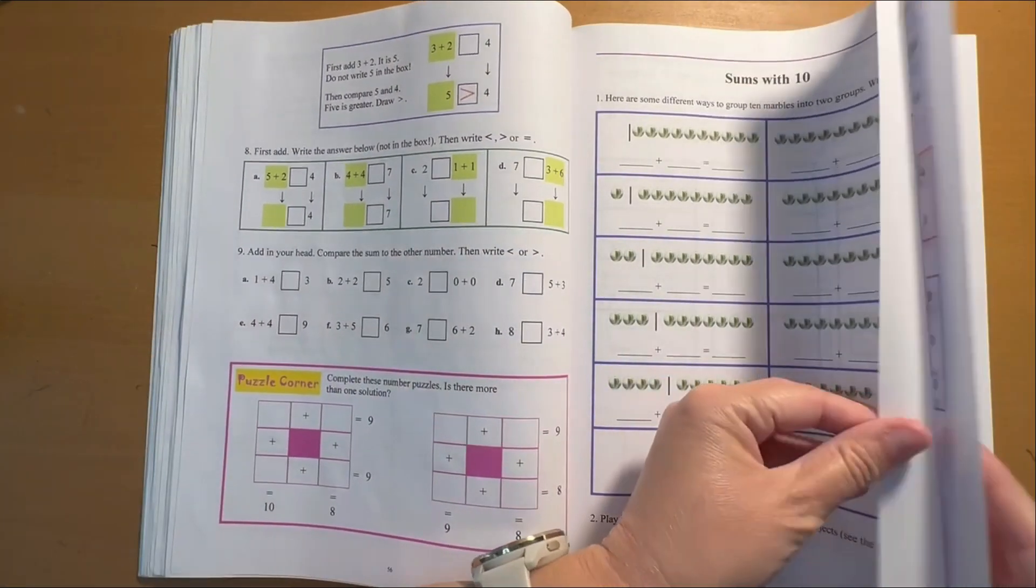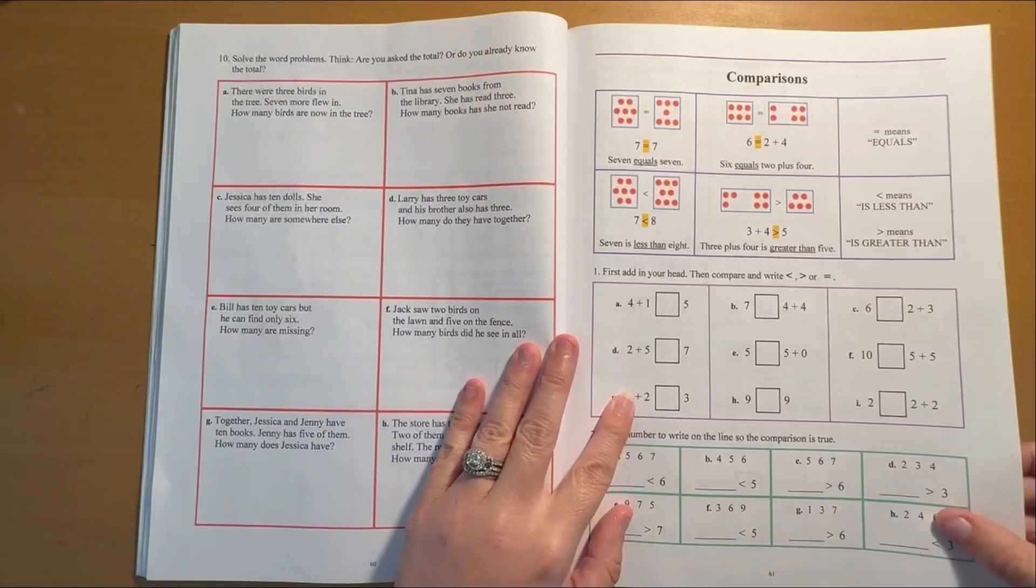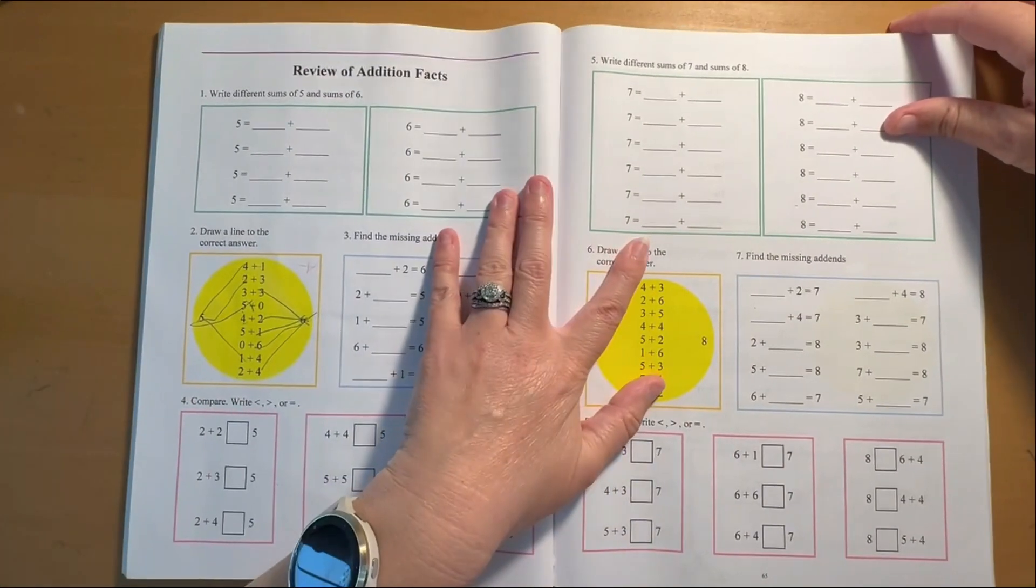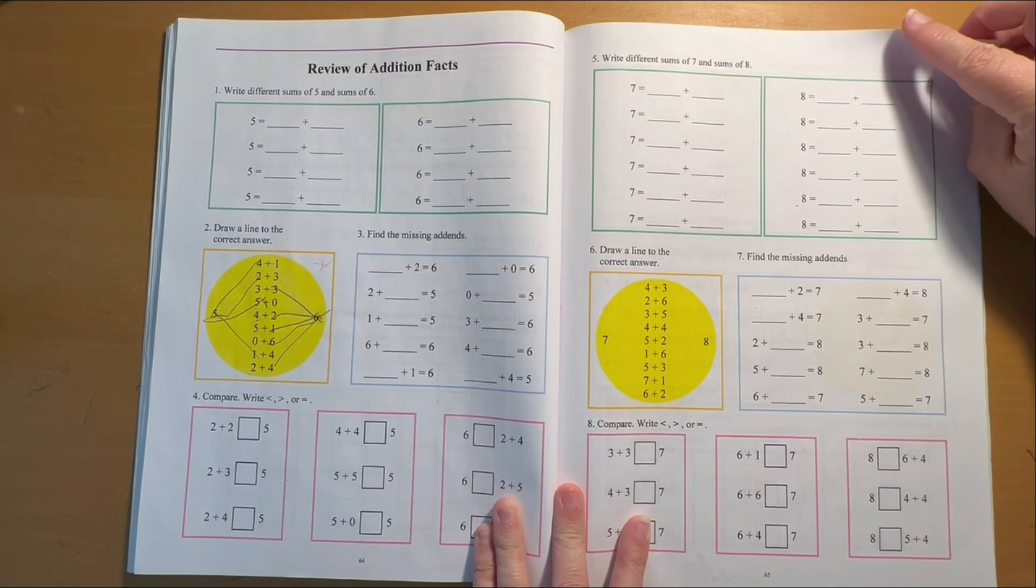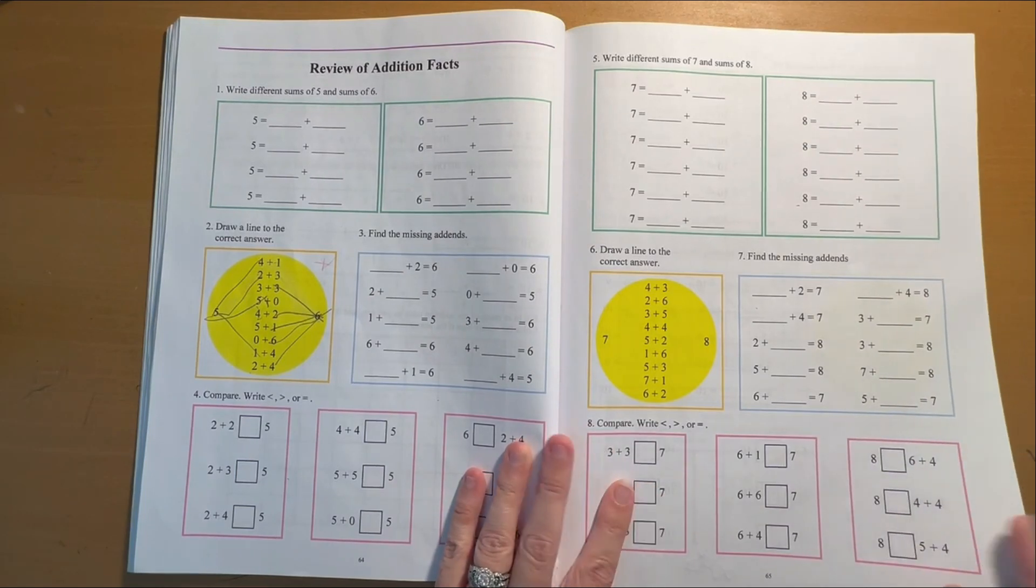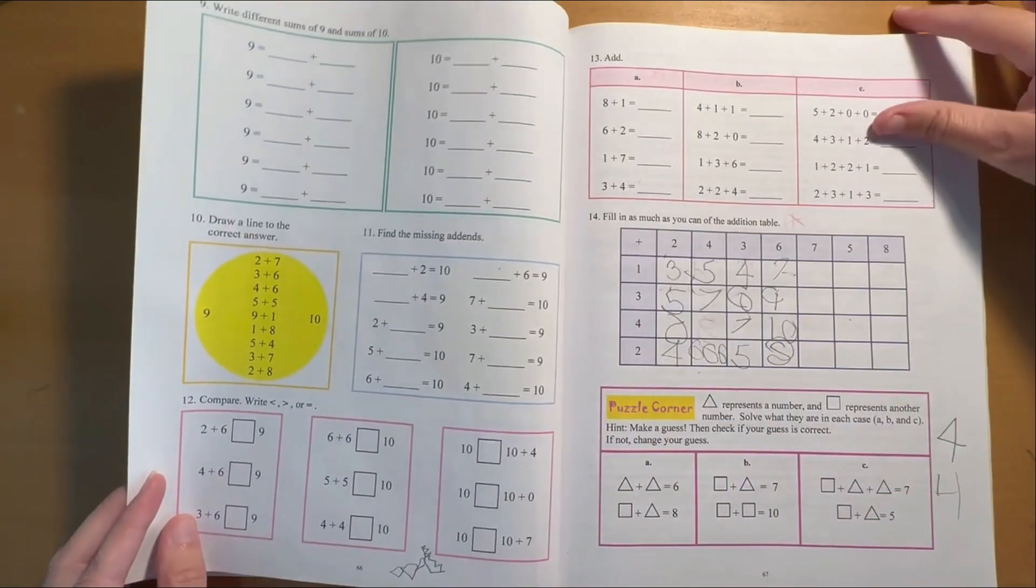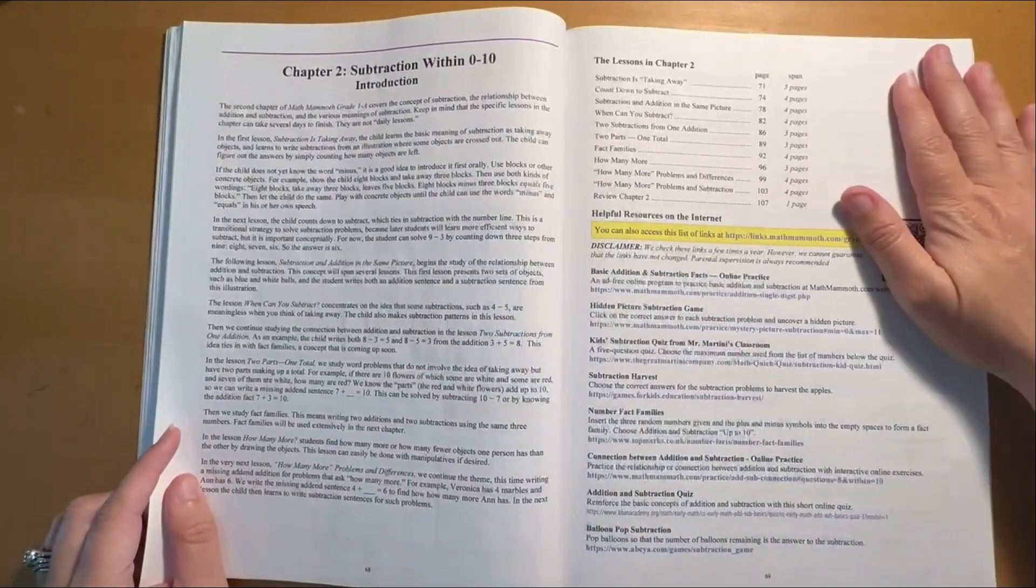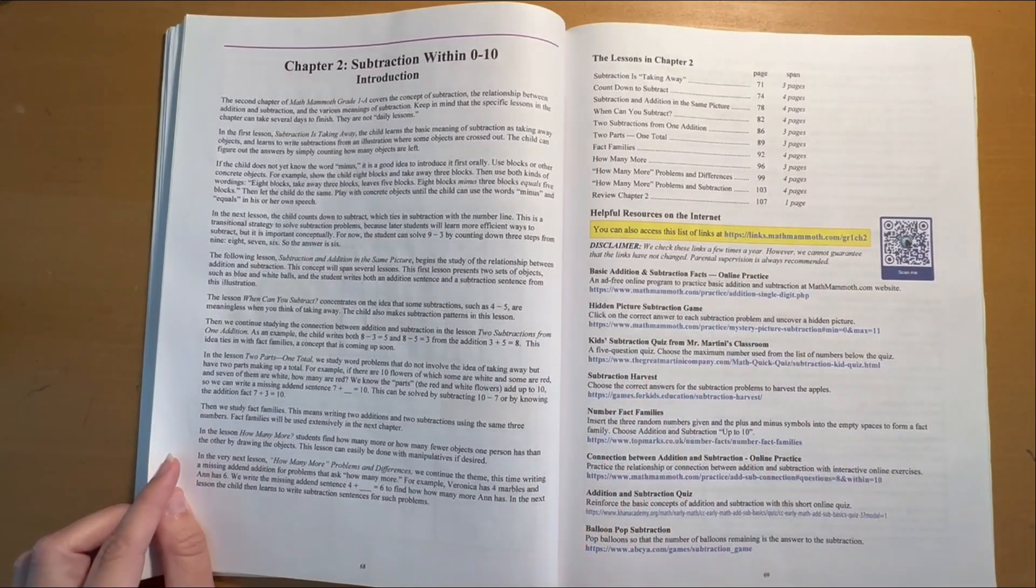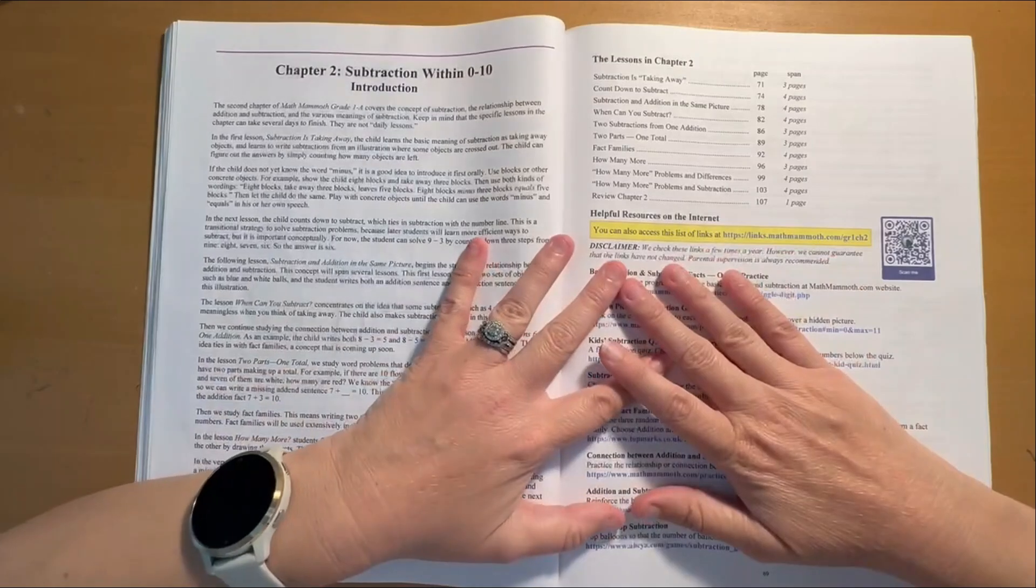Sums with 10. We're all still in this chapter on addition. We're going to do some more comparing quantities. And then here at the very end of the chapter, we have a little bit of review. So you can see if there's anything they completely don't get or have forgotten that you need to go back and review before you move on to the next chapter. And only then do you reach chapter two. So it is very in-depth on one topic.